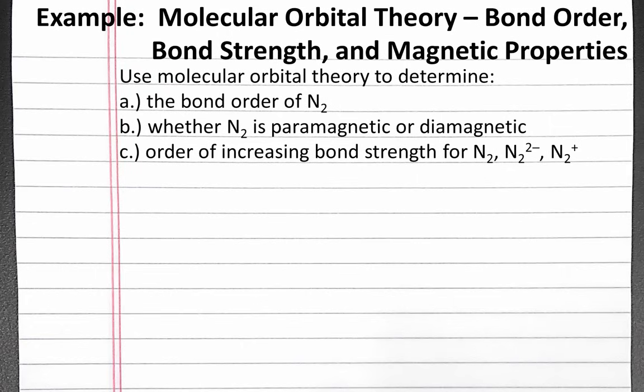In this example problem, we'll use molecular orbital theory to examine the bond order, bond strength, and magnetic properties of different molecules.